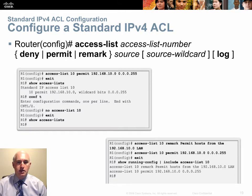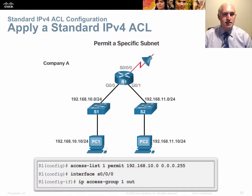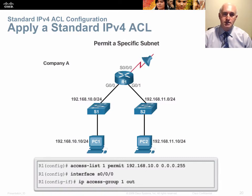Notice the use of the remark statement — feel free to add as many remarks as you like to explain the functionality of your access list. After creating an access list, part two is applying it to the interface. After writing the ACL, go into the interface and type 'ip access-group 1 out'. The 'access-group' command references the access list by number, and you choose the direction — in this case, outgoing.